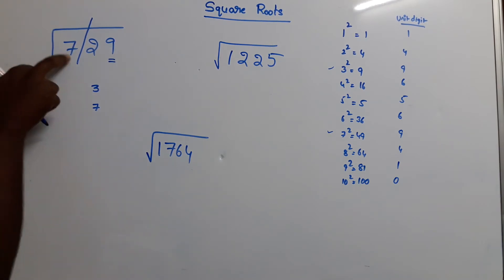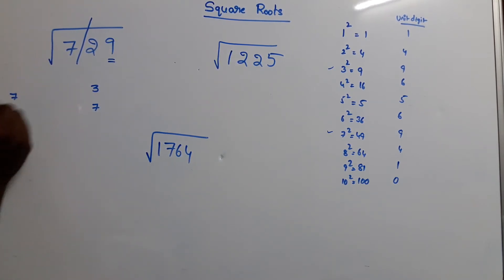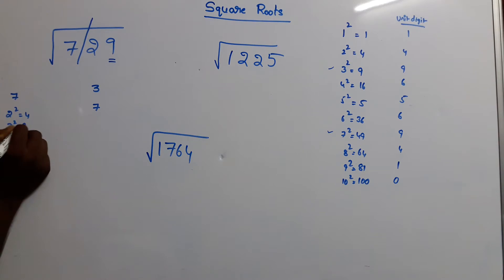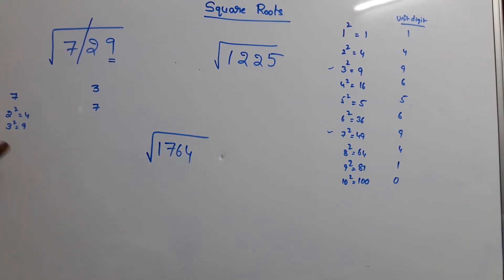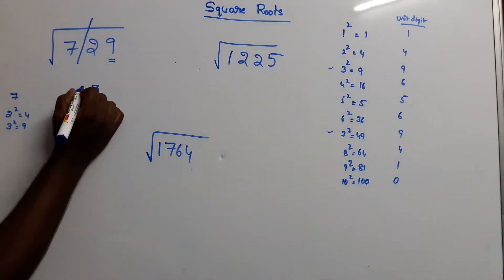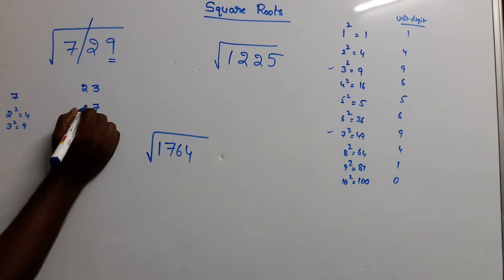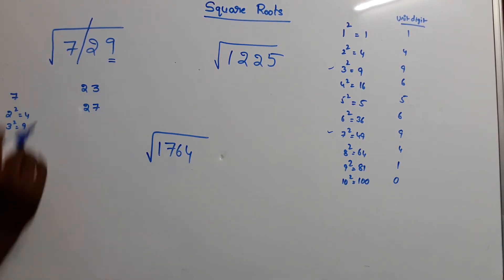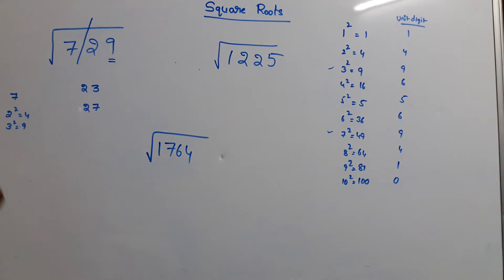The remaining number is 7. So 7 — 2 square is 4, next 3 square is 9. So 7 lies between 2 square and 3 square. The value change gives us 2. So we have these scores: 2 square is 2, and 23 gives 27.